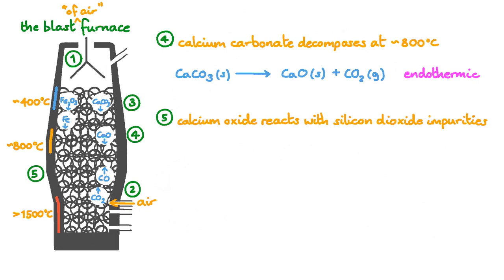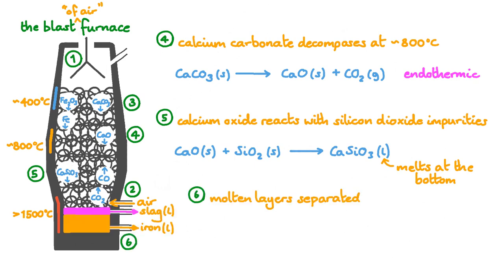In the next step, calcium oxide reacts with silicon dioxide impurities in the ore. This helps keep the silicon impurity levels of the iron at the end low. The calcium silicate produced melts at about the same temperature as iron, so at the bottom, it turns molten. At the bottom, we have a layer of molten iron covered by a layer of molten impurities like calcium silicate. We call this top layer the slag.